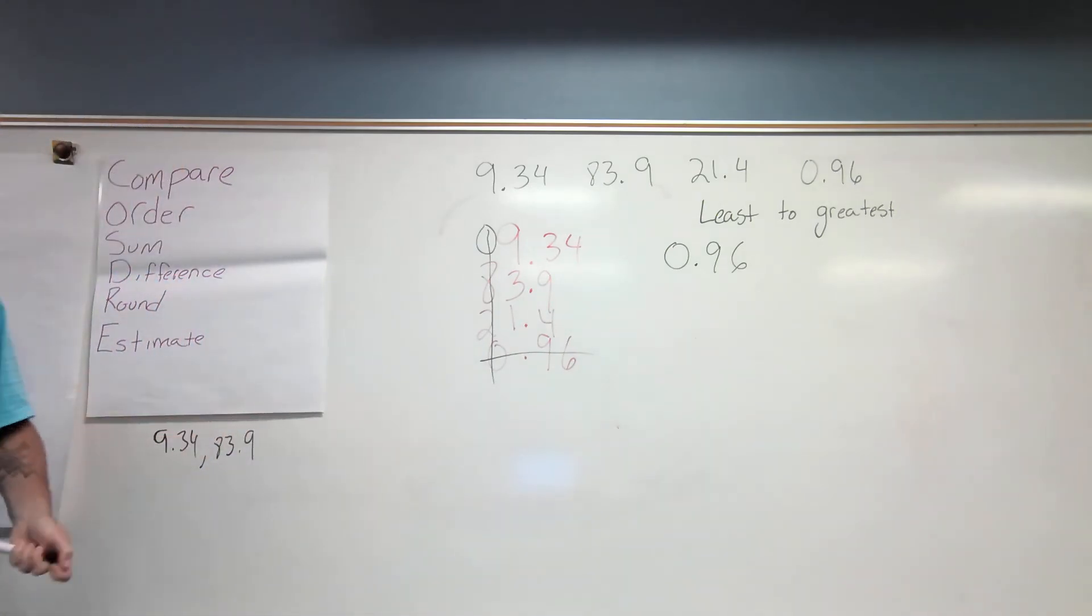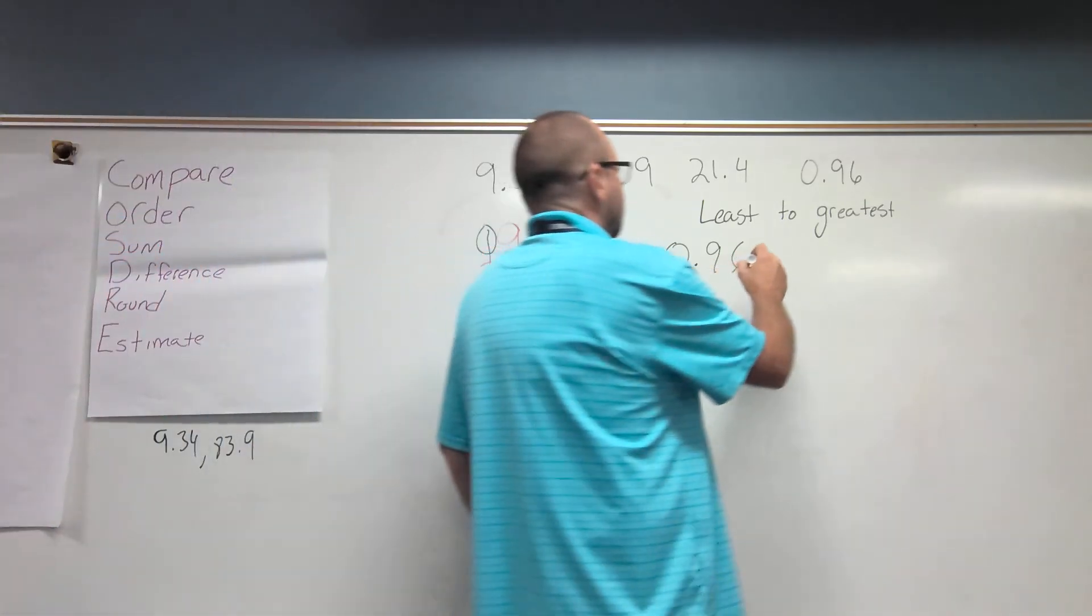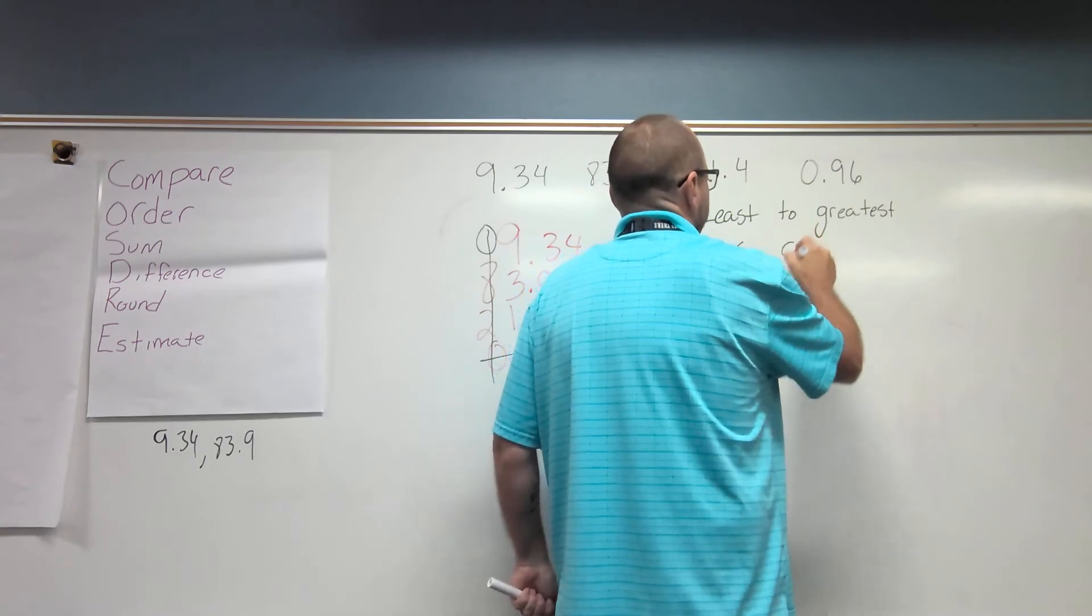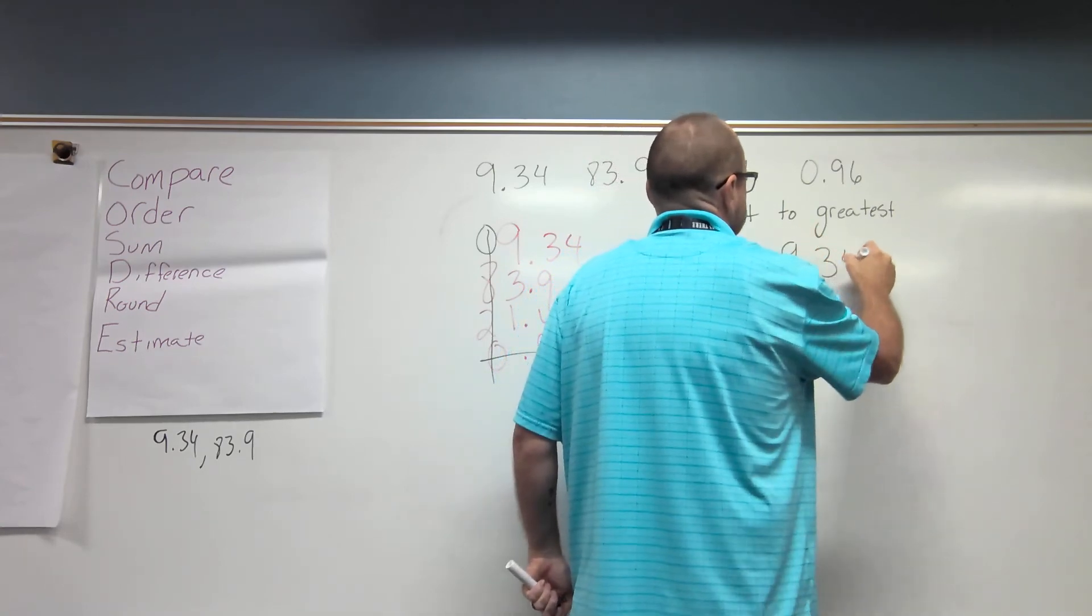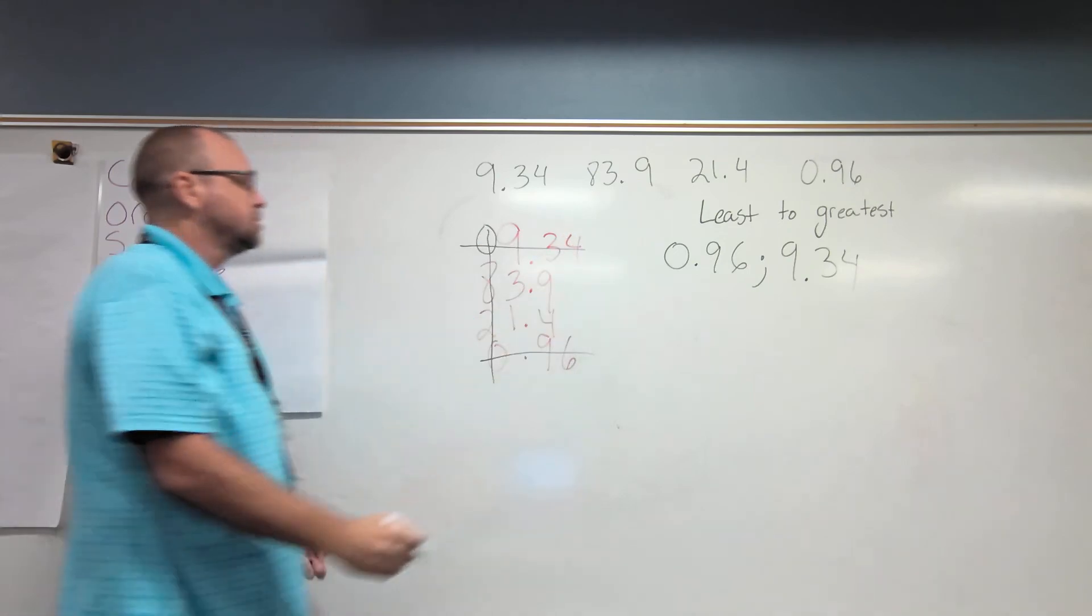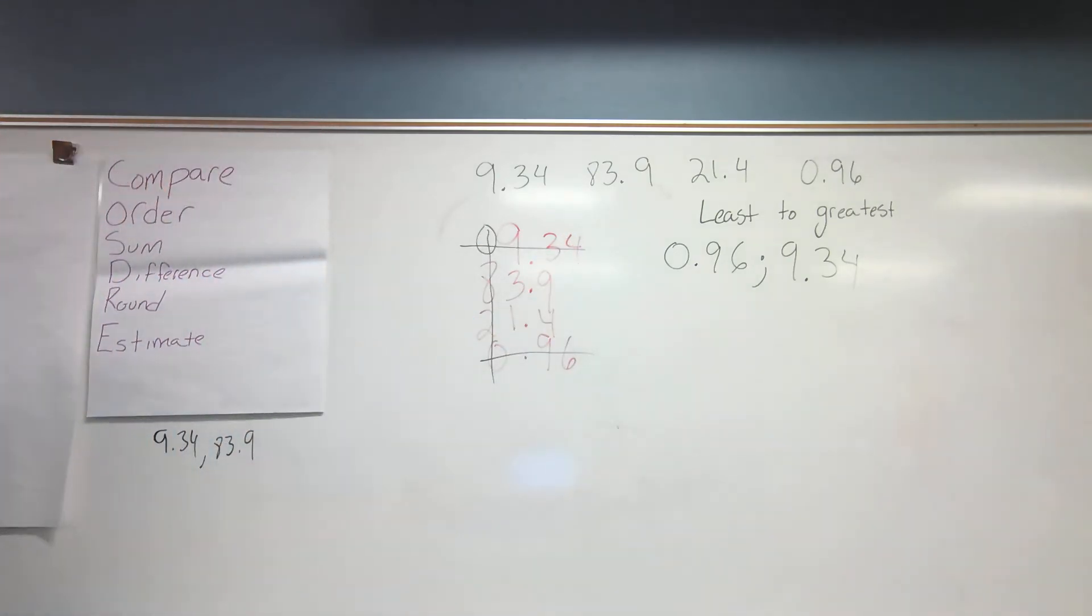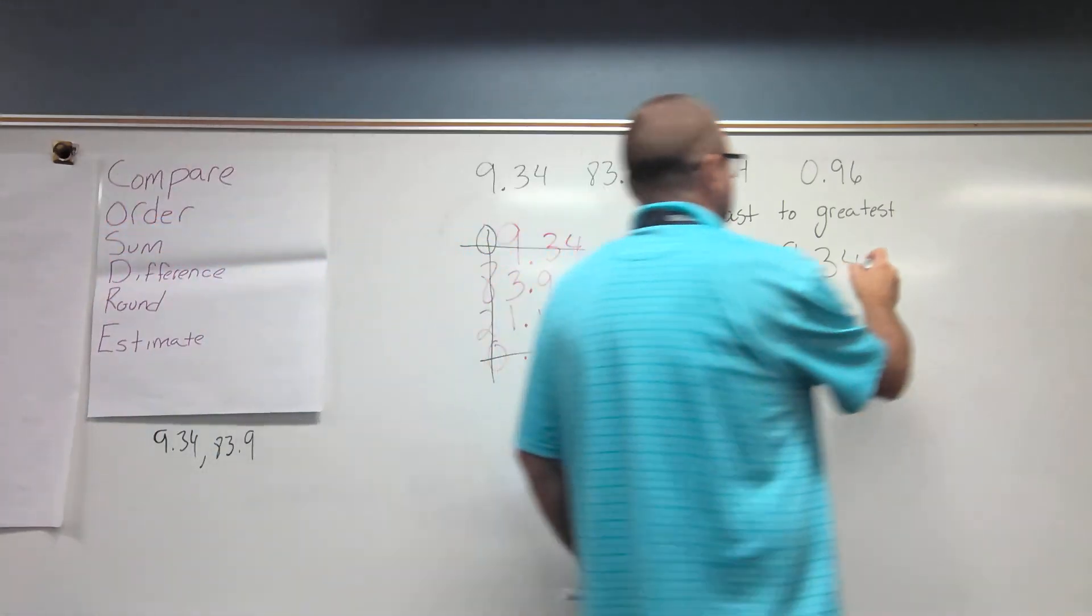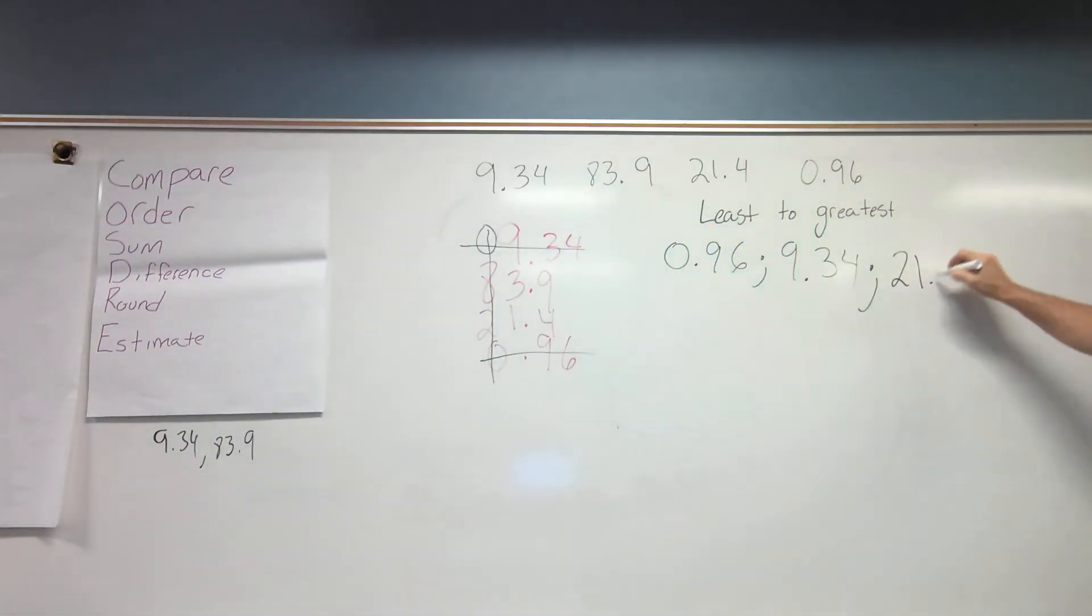Carter, what's the next smallest one? Nine and 34 hundredths. Nine and 34 hundredths. And the next one, Carter? 21 and 4 hundredths. 21 and 4 hundredths. And last but least, we have 83 and 9 hundredths. 83 and 9 hundredths.